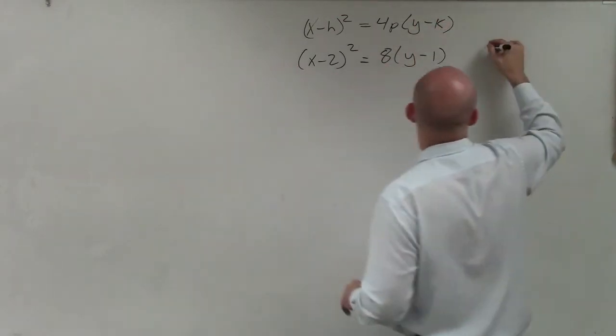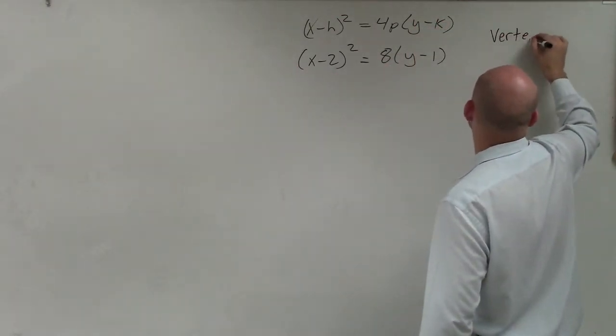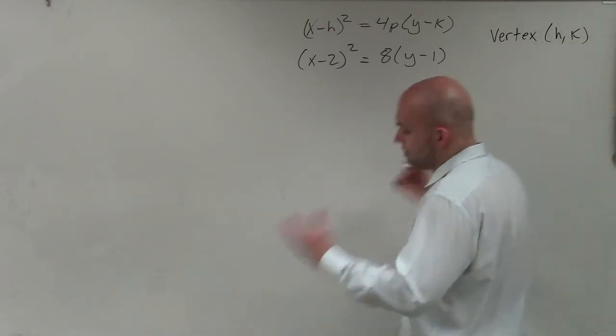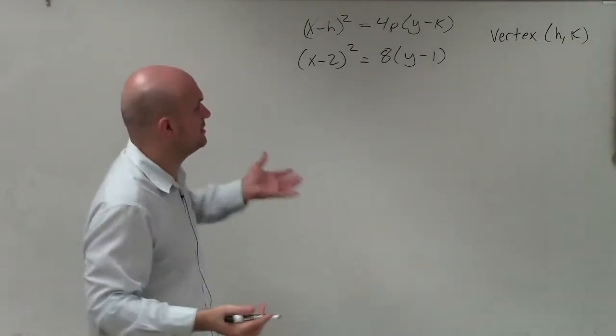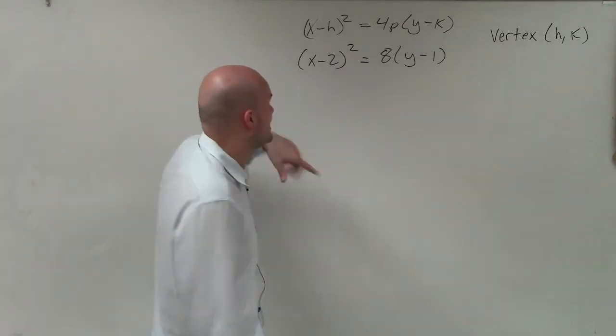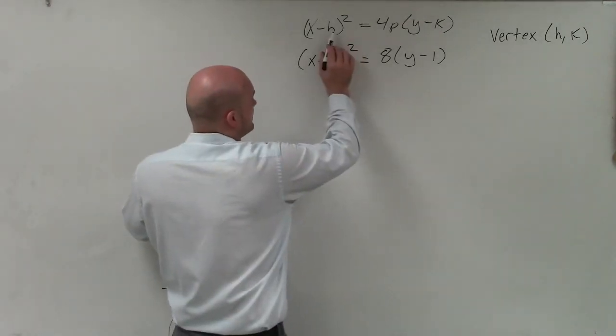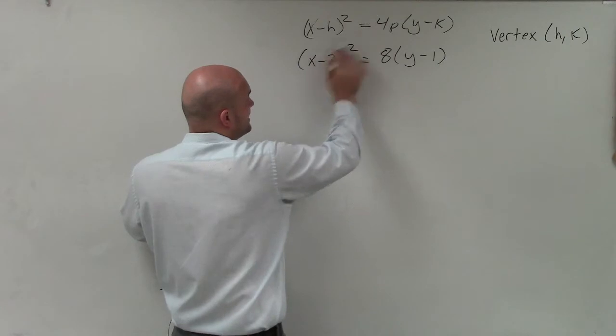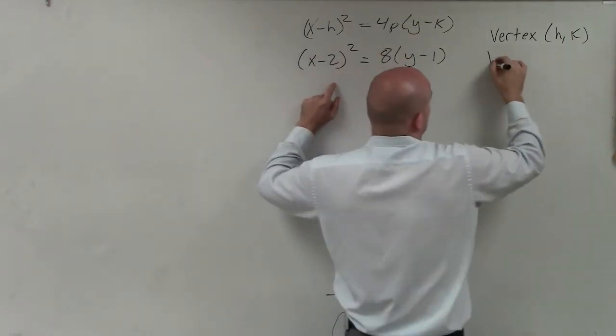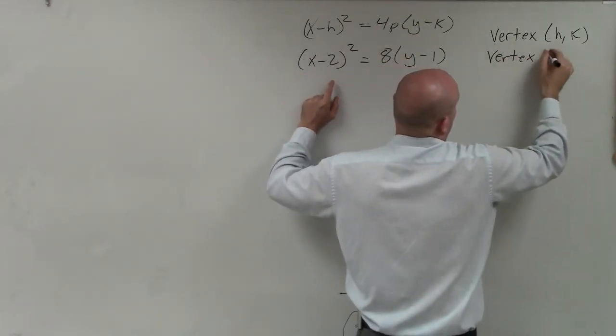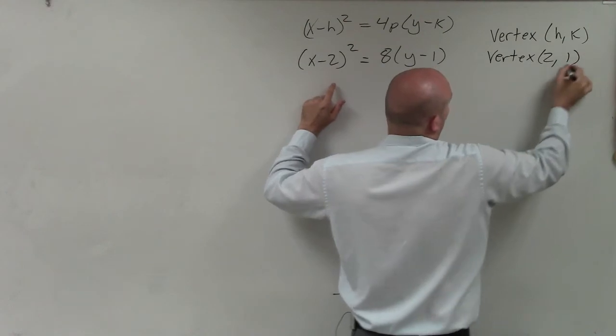And remember that the vertex is (h,k). So I can very easily go ahead and look at this and determine that my vertex is going to be at the opposite of h, opposite of k. So my vertex is going to be at (2,1).